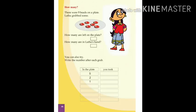Now what can you see in this page? The heading says: there were 9 beads on a plate. Letha grabbed some. So how many are left on the plate? Count it and write in that column. How many are in Letha's hand? Let's count: 1, 2, 3, 4, 5, 6. Six beads are there in the plate.